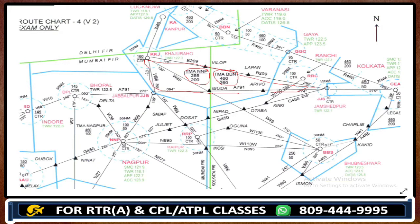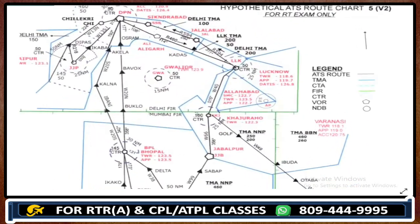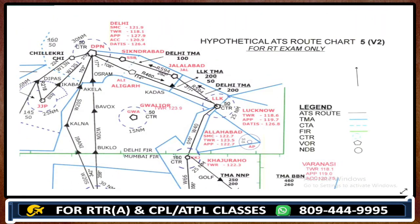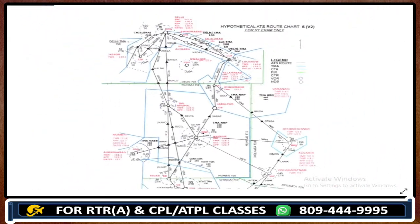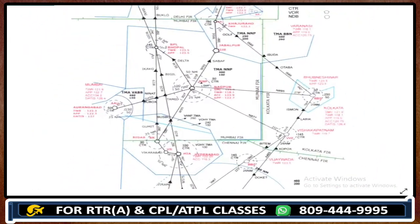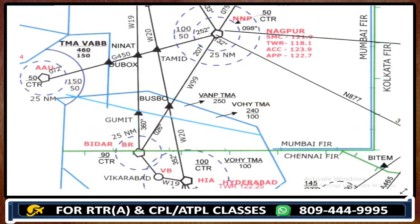Just for more understanding, this is chart number 5. Look over here — nearby the designated point Guzbo, this complete area is also vertically separated among Nagpur TMA and Hyderabad TMA. So this is how we can identify and remember about vertical separation in each chart.